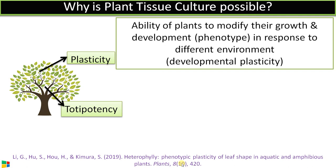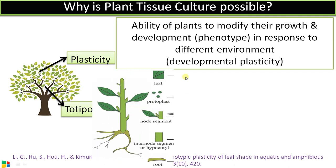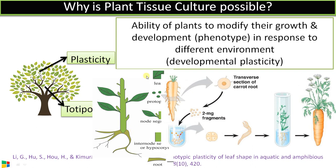Theoretically, any part of the plant — a leaf, a protoplast without a cell wall, a nodal region, or a root — any cell can give rise to a complete plant, provided we supply sufficient nutrients in a controlled environment, as in plant tissue culture.